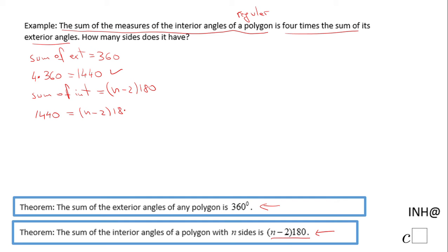This equation can be solved in two ways: distributive property if you want, or simply divide by 180. 1440 divided by 180, that is 8. 8 equals n minus 2, and the last step is to add 2.